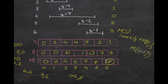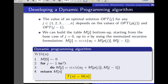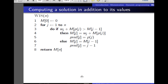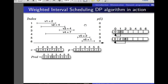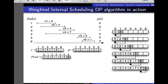So the final M array is: 0, 2, 4, 6, 7, 8, 8. This is the optimal solution — the maximum non-overlapping, maximized weighted interval scheduling result. The complexity for this algorithm is O(n) because the loop traverses from 1 to n. The inner max operation is O(1) since it just compares two values in constant time.